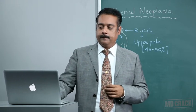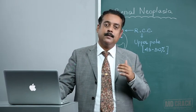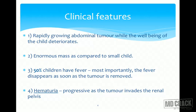The clinical features of this tumor: it is a rapidly growing abdominal tumor which will grow while the child's general condition deteriorates. The mass is quite enormous compared to the small child. 50% of children will have fever as a most prominent feature. As fever disappears, the tumor is considered dissolved or removed, so fever has a good prognostic indication. Hematuria will progress as the tumor engulfs renal tissue, initially from the collecting system to renal parenchyma and eventually the entire kidney, resulting in painless and progressive hematuria.